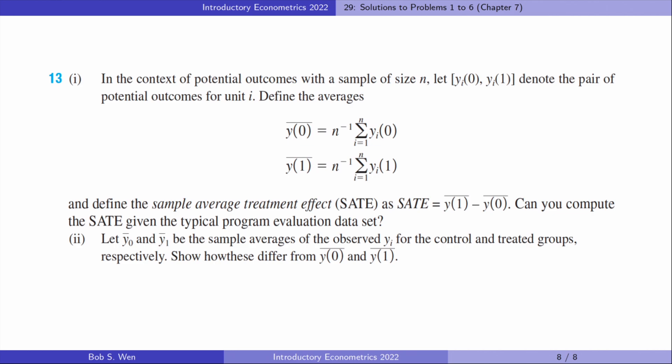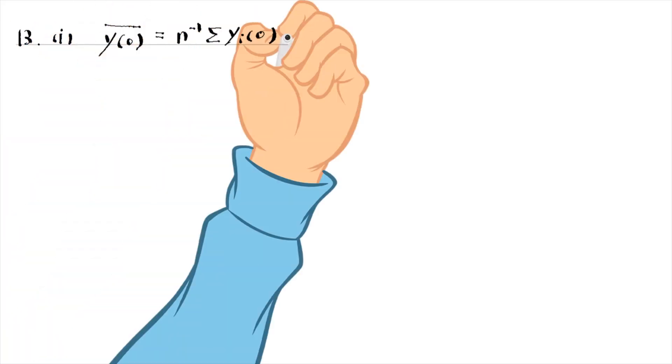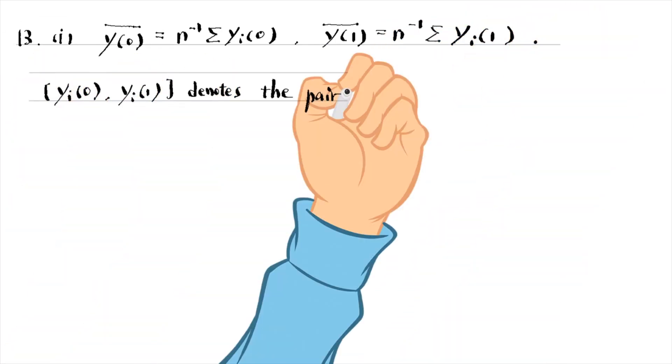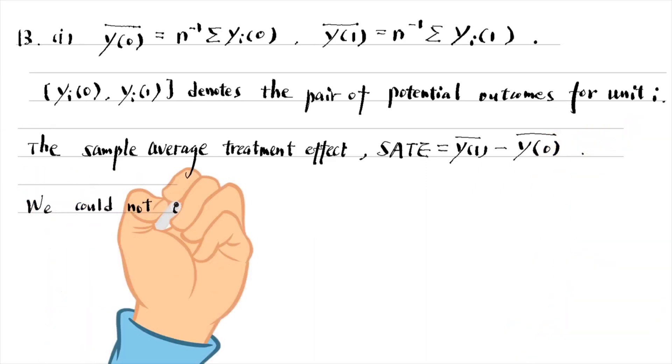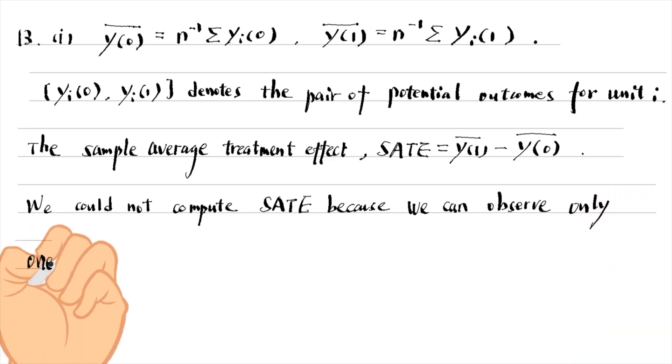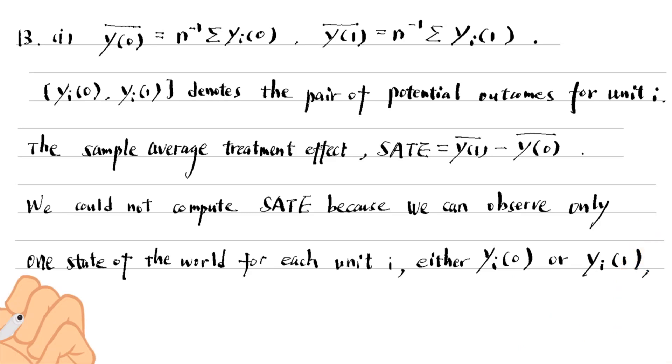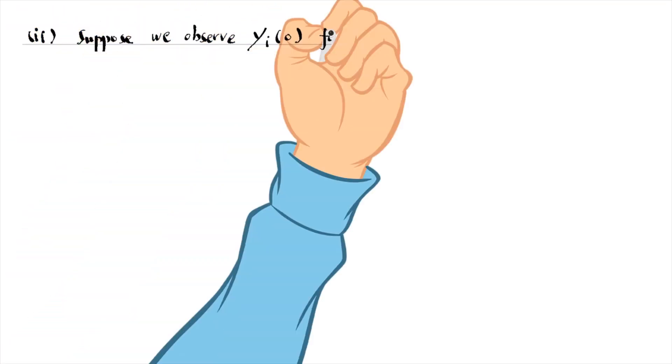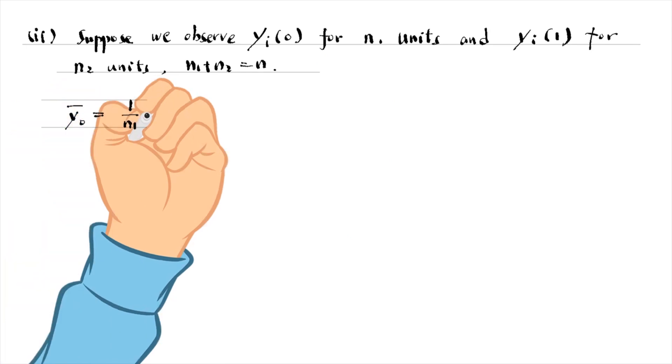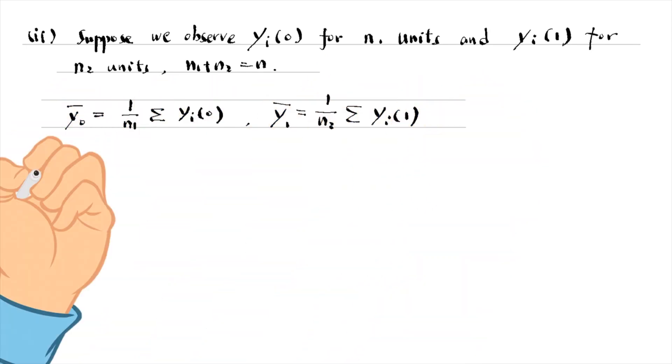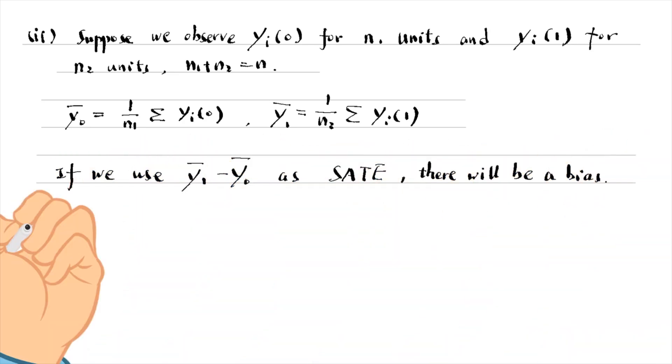Let's complete the last problem. We could not compute the sample average treatment effect, SATE, because we can observe only one state of the world for each unit i, either yi0 or yi1, but not both. We cannot compute y0 bar and y1 bar because we cannot observe both outcomes for each unit. For part 2, suppose we observe yi0 for n1 units and yi1 for n2 units. y0 bar is the mean of the n1 observations and y1 bar is the mean of the n2 observations. If we use y1 bar minus y0 bar to compute the sample average treatment effect, there will be a bias.